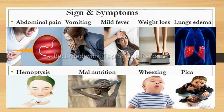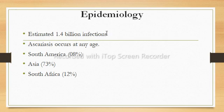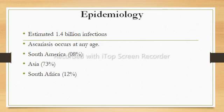Regarding the epidemiology of Ascaris lumbricoides: an estimated 1.4 billion people have been infected worldwide. Ascaris occurs at any age, but children aged 2 to 10 years are most affected due to poor hygiene. The distribution of cases is approximately 8% in South America, 73% in Asia, and 12% in South Africa.